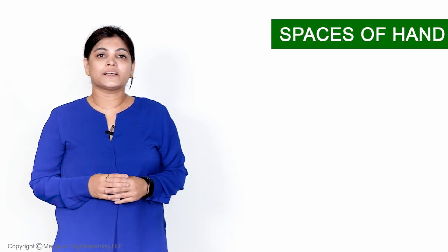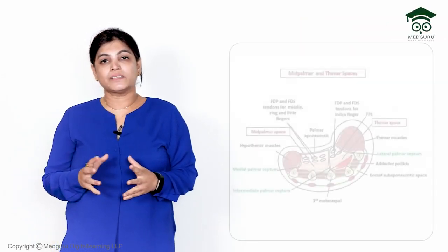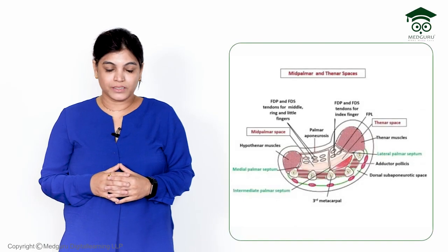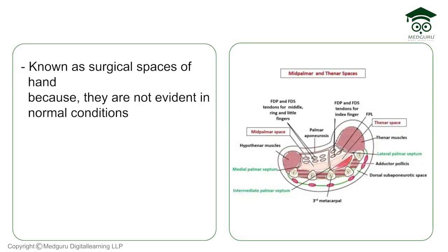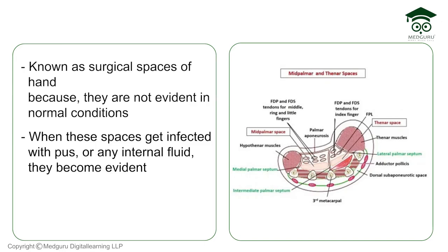In this section of upper limb, I am going to explain the spaces of hand. These are called surgical spaces of the hand, because these spaces are not evident in normal condition. When these spaces become infected with any pus or internal fluid, they become evident.